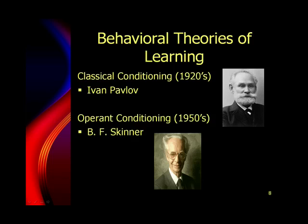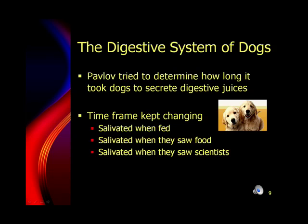The behavioral theories of learning we're going to focus on in this class are probably theories you've heard a lot about in prior classes: classical conditioning, with Ivan Pavlov being the theorist behind that one, and operant conditioning, with B.F. Skinner being the theorist behind that theory. Pavlov was actually a Russian physiologist who was studying the digestive system of dogs, but in doing so he found out some things about learning that had applications to humans as well.